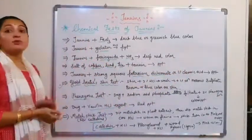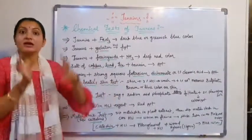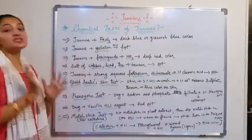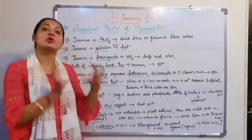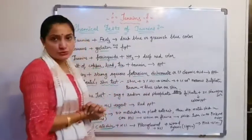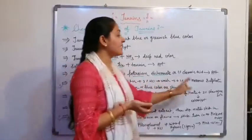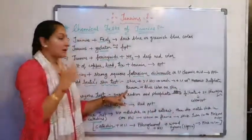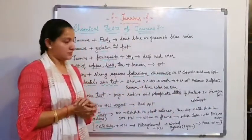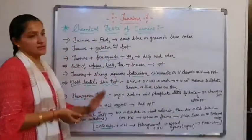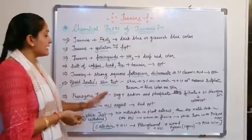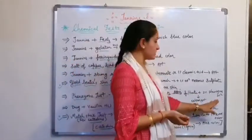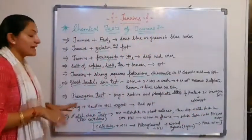Tannins with ferric cyanide in the presence of ammonia (alkaline environment) give a red color. Tannins in the presence of ferrous sulphate solution cause the skin to become brownish or blue in color. In the phenazone test, the drug is treated with sodium acid phosphate, the filtrate is taken, and phenazone solution is added — it gives a colored precipitate, confirming the presence of tannins.